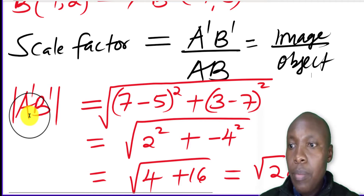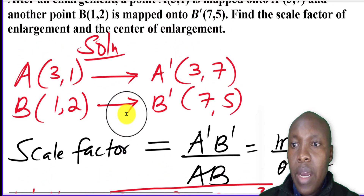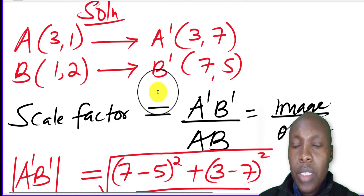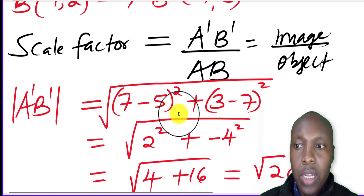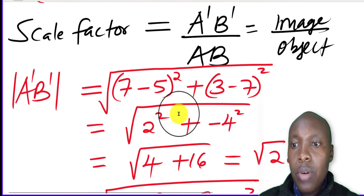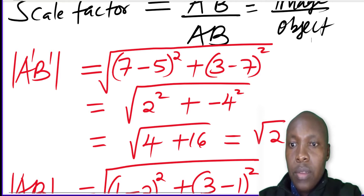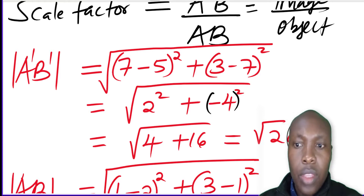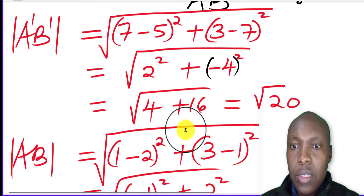We need to get the length of A'B' — the modulus or magnitude of that line. Using the two points, we compute: (7−5) squared plus (3−7) squared, then take the square root. That gives us 2 squared plus (−4) squared — it's important to keep that in brackets — so negative 4 squared gives 4 plus 16, which is the square root of 20.